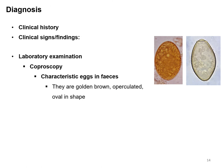Diagnosis of Diphylobothrium latum infection is difficult based on clinical signs alone. Confirmatory diagnosis is done by coproscopy, during which characteristic eggs can be found. The eggs are golden brown in color and operculated. They can sometimes be confused with eggs of Fasciola, but the size of the Diphylobothrium egg is roughly half the size of a Fasciola egg.